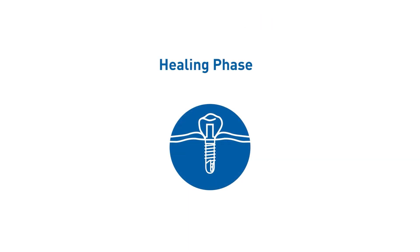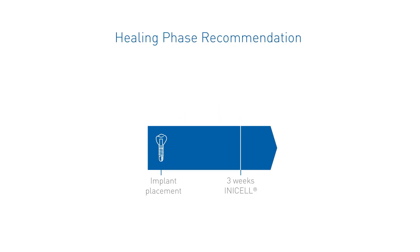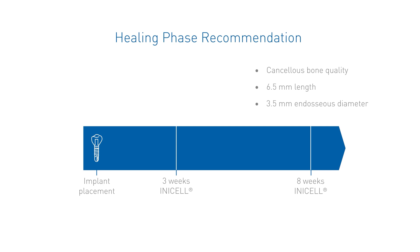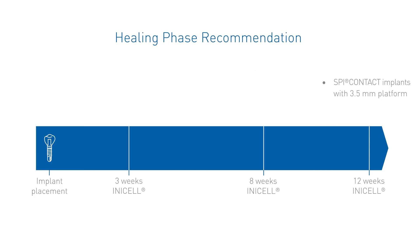For implants with an NSL surface, it is recommended to have a healing phase of at least 3 weeks. At least 8 weeks of healing are recommended in case of cancellous bone quality, implants with a length of 6.5 millimeters, or implants with an endosseous diameter of 3.5 millimeters. The healing phase further prolongs to a minimum of 12 weeks in case contact implants with a platform of 3.5 millimeters have been used. In situations in which the sandblasted and acid etched surface is not completely in contact with the bone, or if bone augmentation measures are necessary, the healing phase needs to be adjusted accordingly.